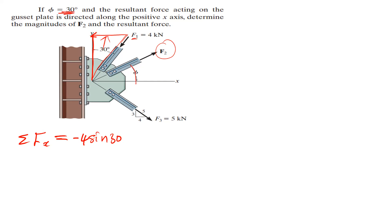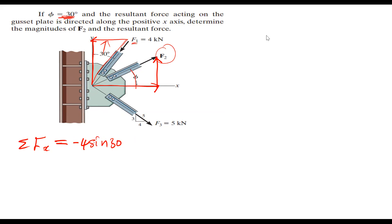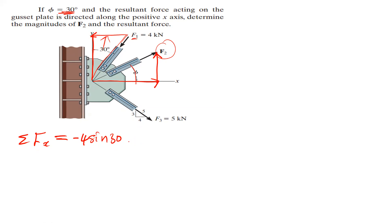Since phi is 30, we say positive because F2 is moving in the positive x-axis direction. So we write positive F2 times cosine 30.